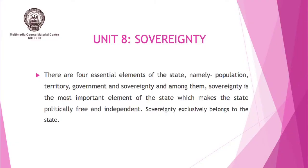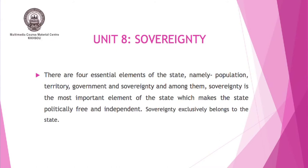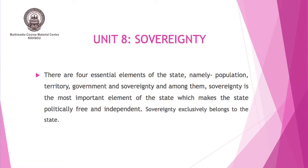Welcome everyone, dear friends. Today we are going to discuss one of the important topics of political science, that is sovereignty. As we all know, there are four essential elements of state: population, territory, government, and sovereignty. Among them, sovereignty is the most important element of the state, which makes the state politically free and independent, both internally as well as externally. Sovereignty exclusively belongs to the state.